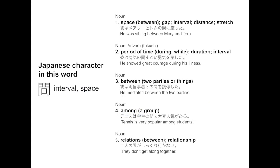MA literally means space, gap, interval, distance, or period of time, duration, interval. We can see this meaning graphically in the original ancient character, as it depicts both a gate and the moon in between. MA is thus literally the empty space defined by the gate where moonlight is shining through.